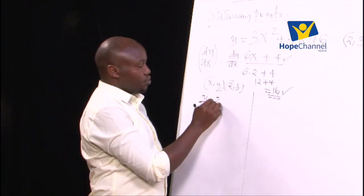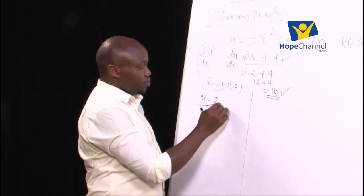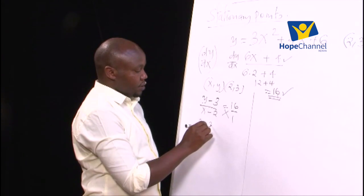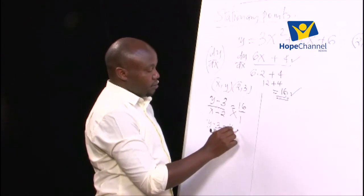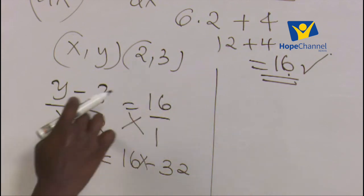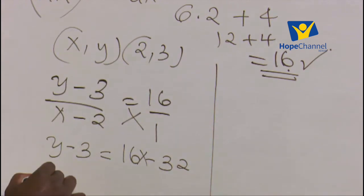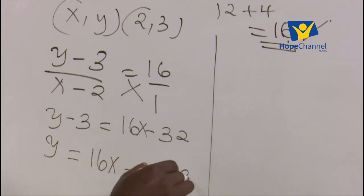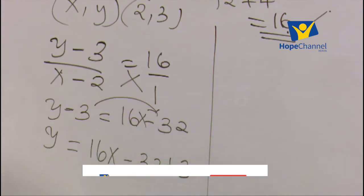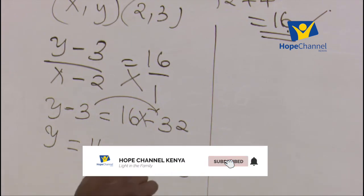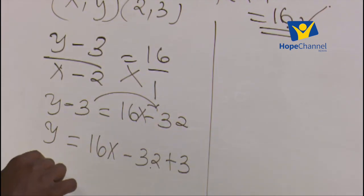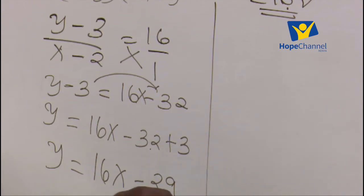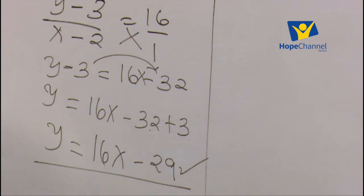From there, we went ahead to get the equation of a tangent. Introduce new point x, y. We have our points (2, 3) and gradient 16. So: (y − 3)/(x − 2) = 16/1. Cross multiplying gives y − 3 = 16x − 32, so y = 16x − 32 + 3 = 16x − 29. That is the equation of the tangent.